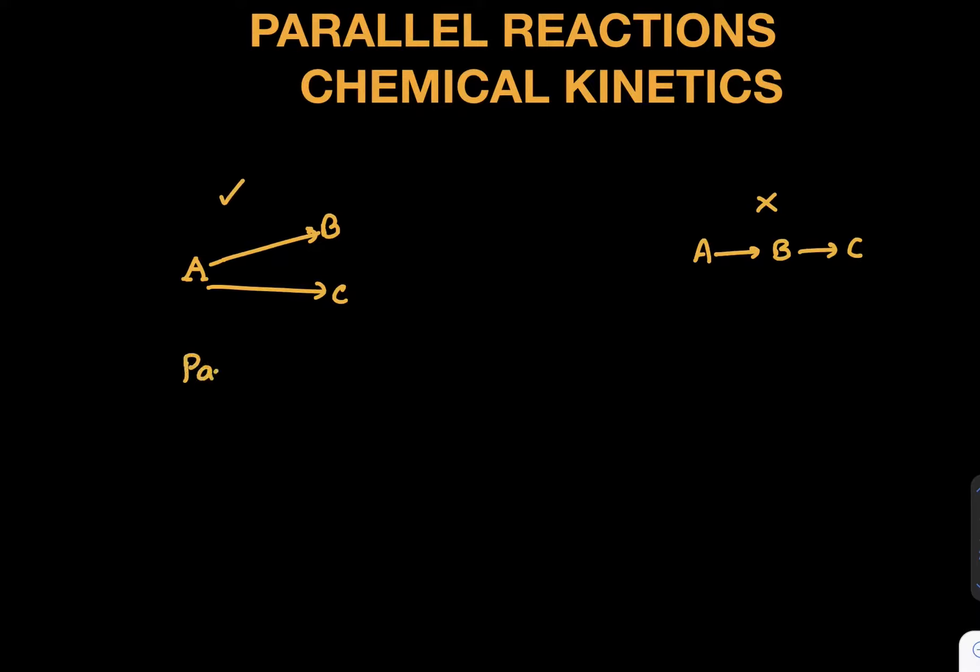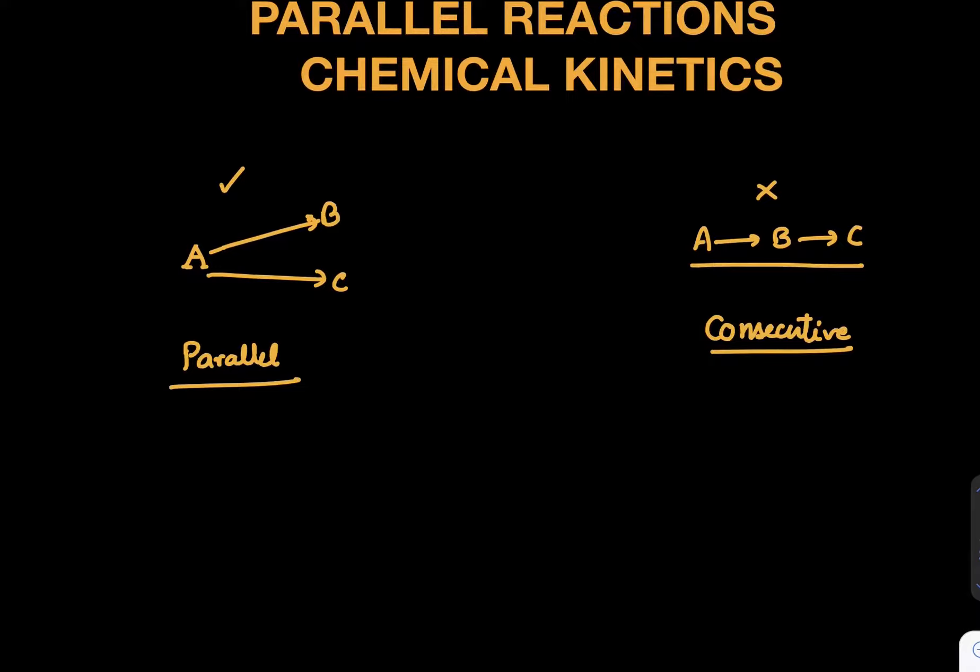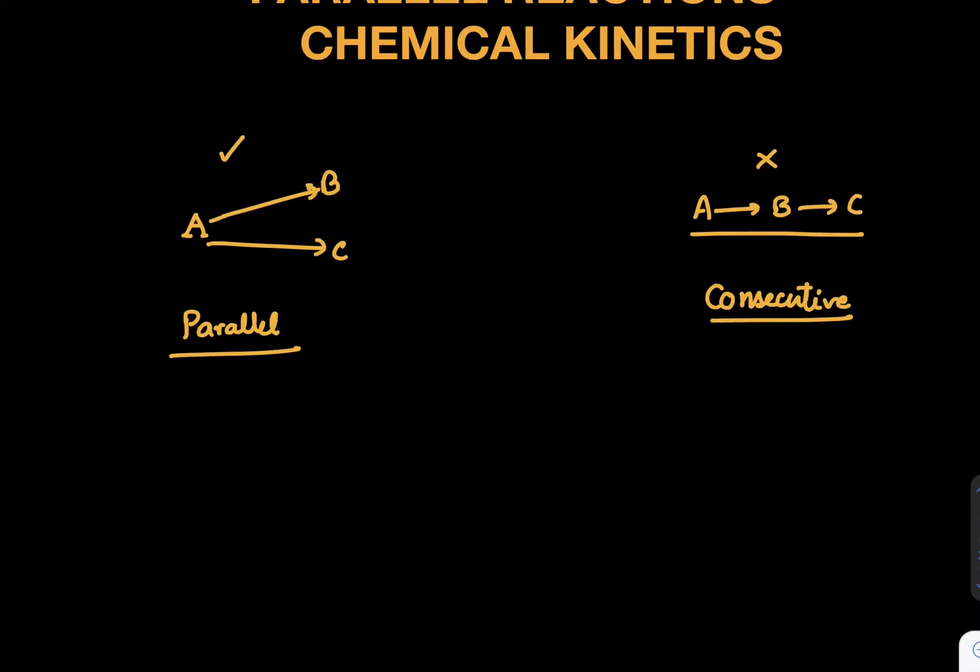This is known as parallel reaction. When you have this kind of situation, when A becomes B and B becomes C, it is called consecutive reaction. Right now we are discussing parallel reaction and their rate kinetics. So let us see that.